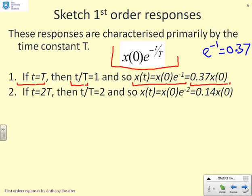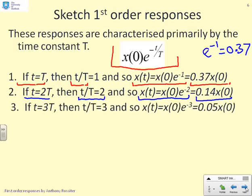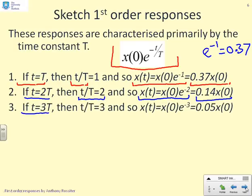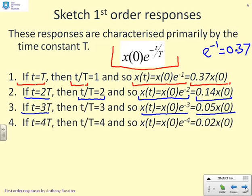What happens if I substitute t = 2T? Well, t/T becomes 2, and x(t) becomes x(0) e^(-2), which is roughly 0.14 x(0). At t = 3T, I get x(t) = x(0) e^(-3), which is roughly 0.05 x(0). Finally, if I put in t = 4T, I end up with x(0) e^(-4) or roughly 0.02 x(0). Please note that all these numbers are done to two decimal places. There is no point to doing them any more accurately, especially when you're only sketching.